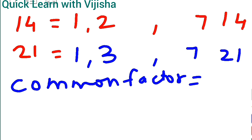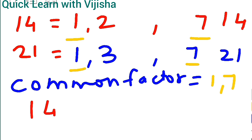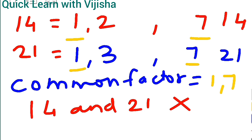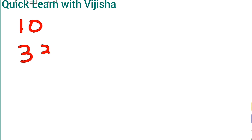Now coming to the common factors of 14 and 21 — they are 1 and 7. Here also we are getting 2 common factors, so 14 and 21 are not co-prime numbers.